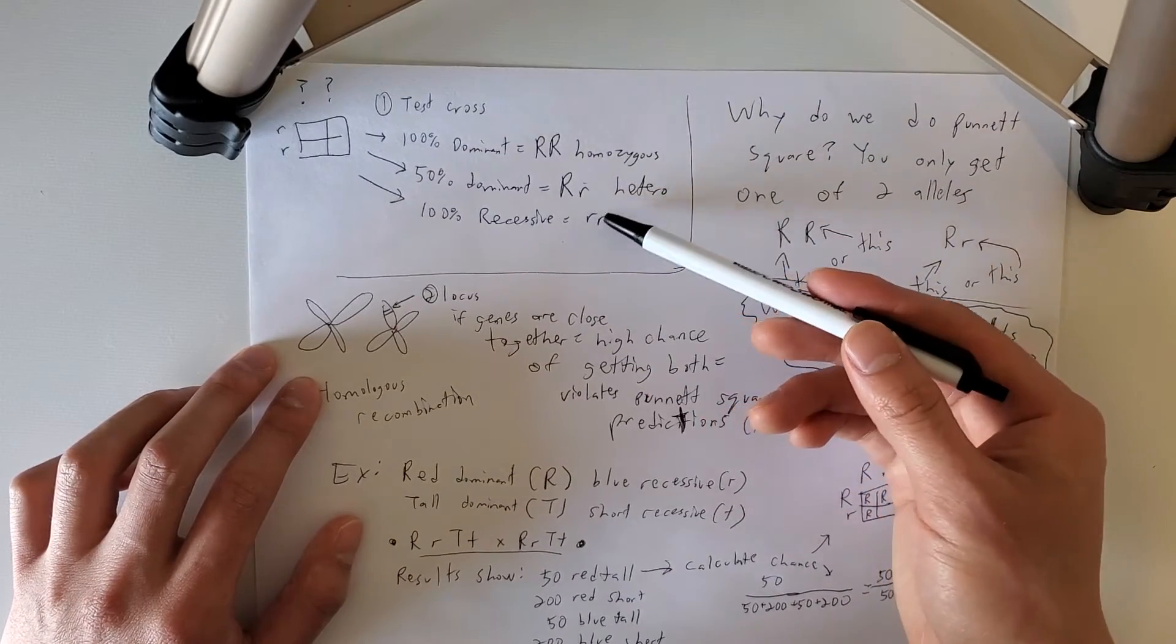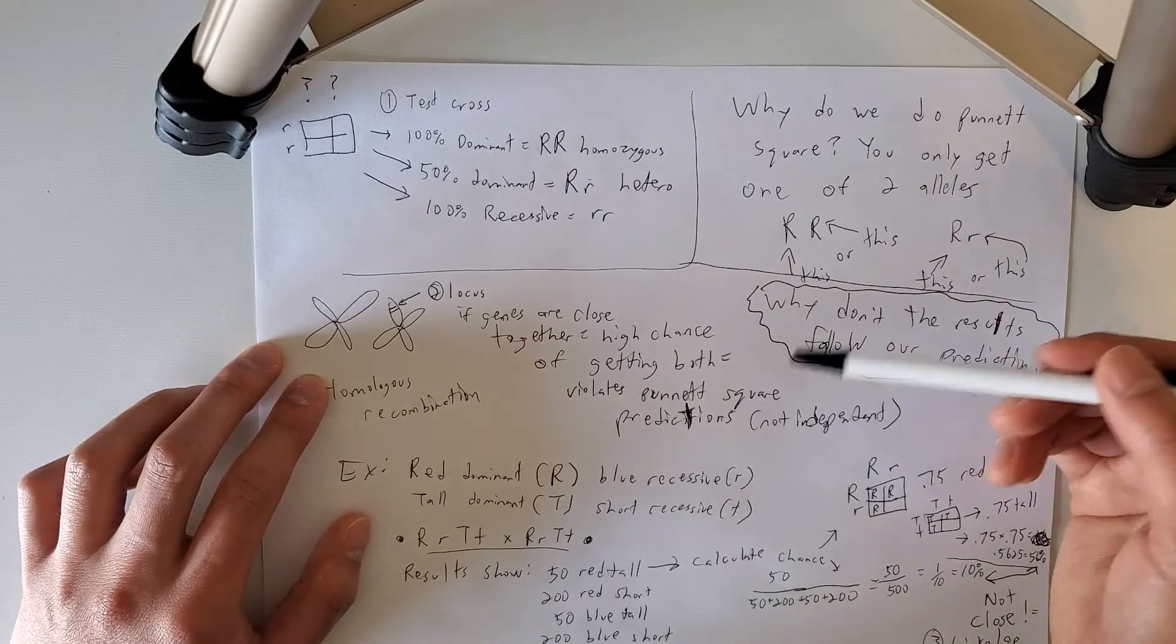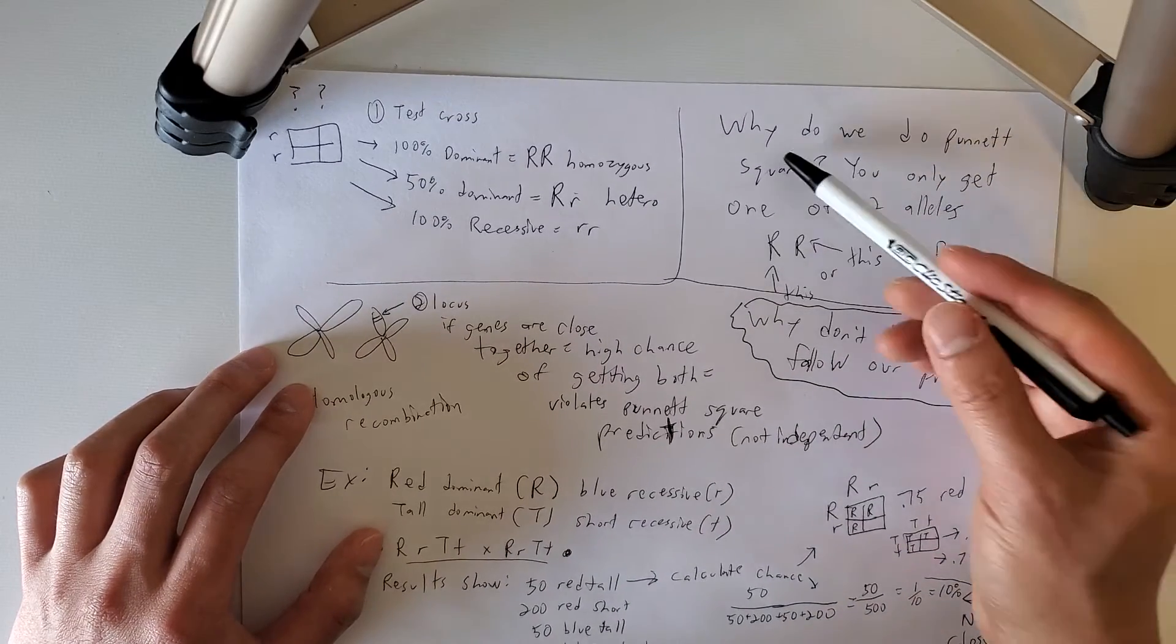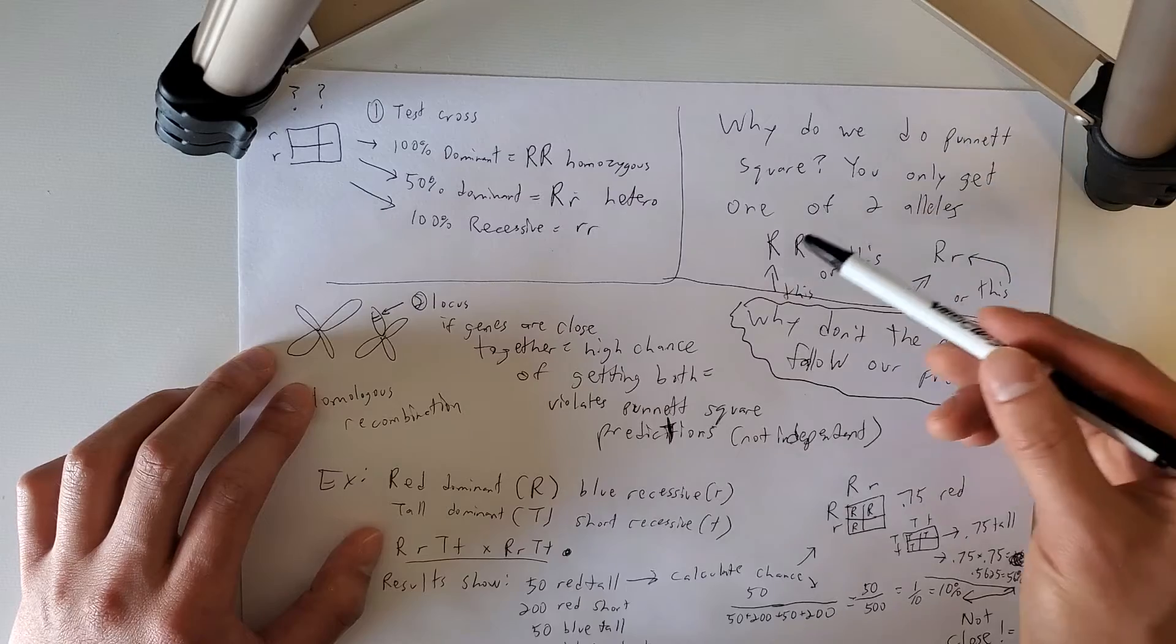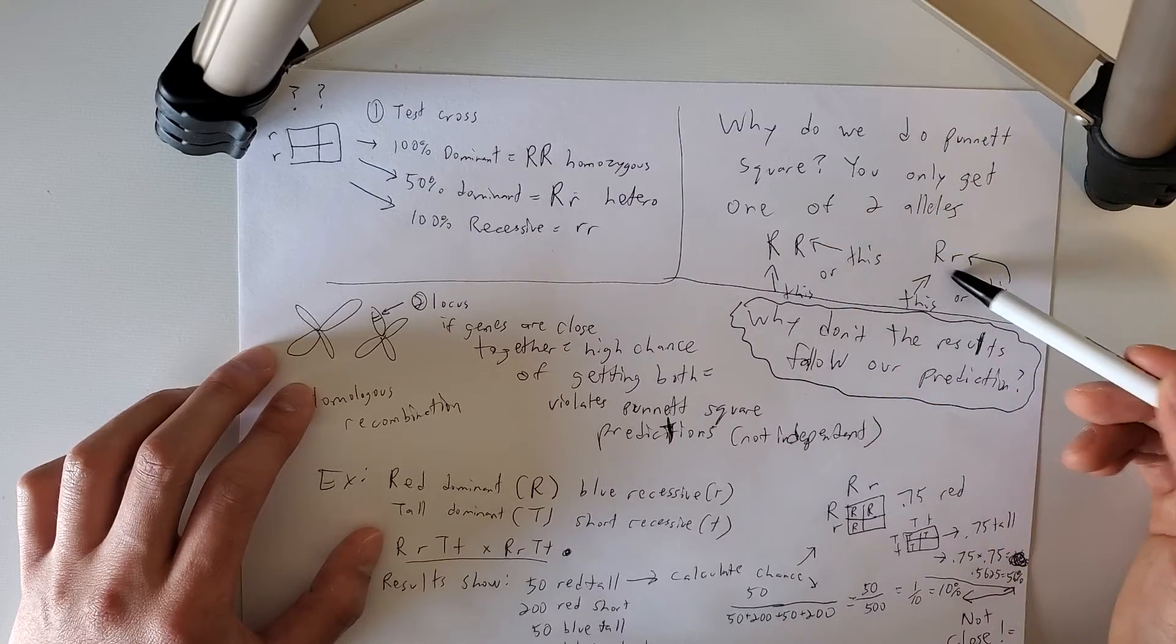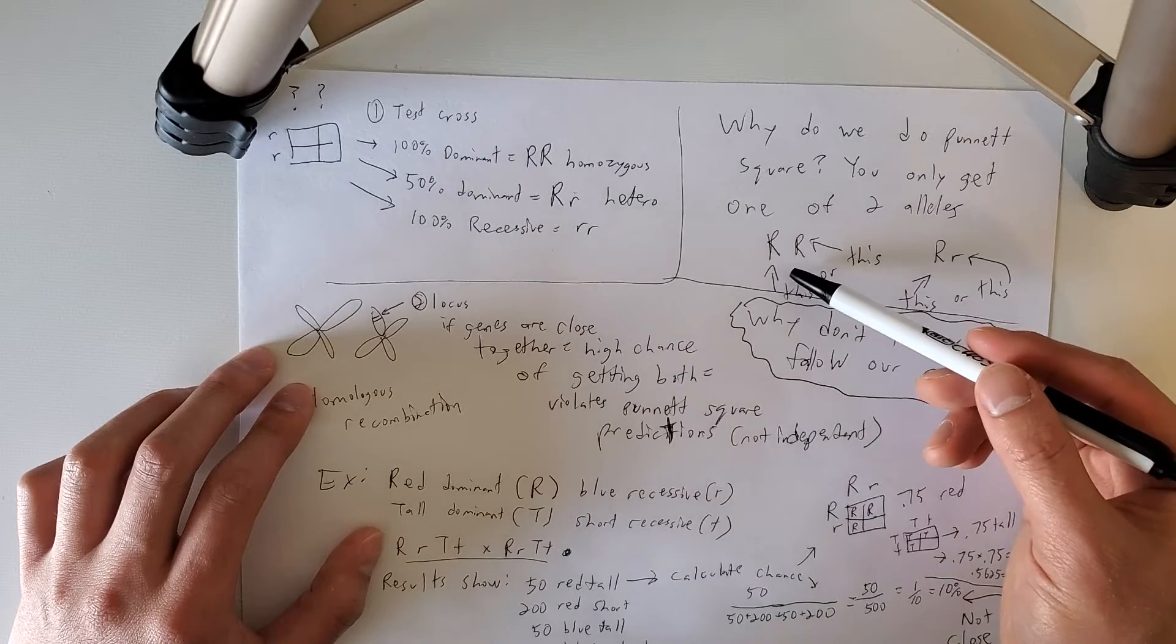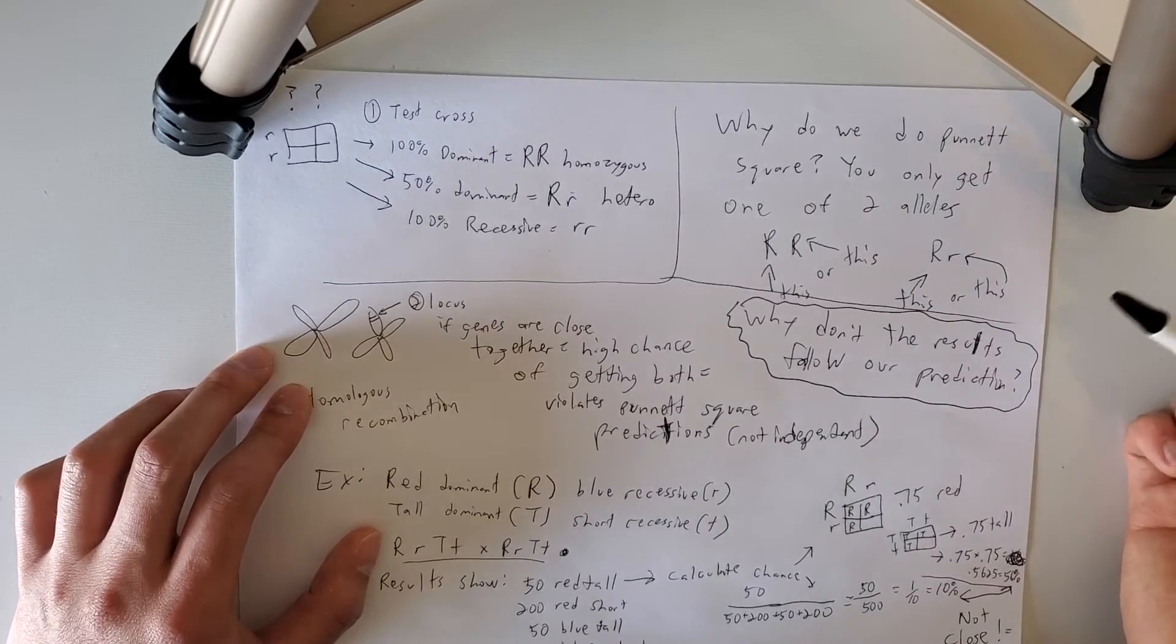Now, let's go into the next part, which is how come sometimes the results of a Punnett square do not follow our prediction. Before I do that, why do we do the Punnett square? First of all, because once again, you only get one of the two alleles. So that's the whole point of the Punnett square. It's making a prediction of what if the parent gives this allele or it gives this allele. That's the whole point of the Punnett square.